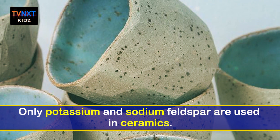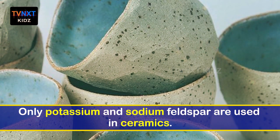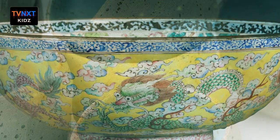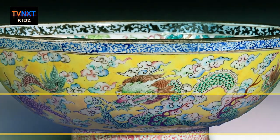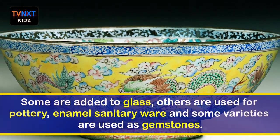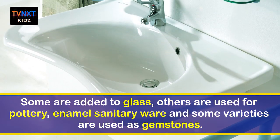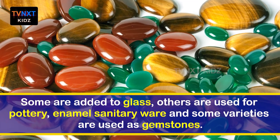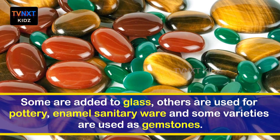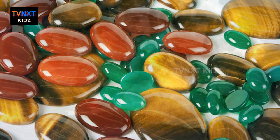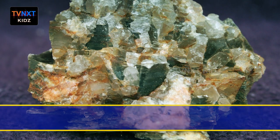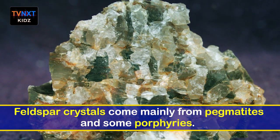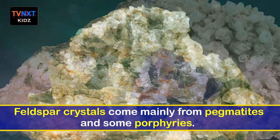Only potassium and sodium feldspar are used in ceramics. Some are added to glass, others are used for pottery, enamel sanitary ware, and some varieties are used as gemstones. Feldspar crystals come mainly from pegmatites and some porphyries.